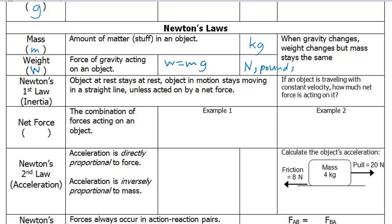One key thing that comes up here is this example. If an object is traveling with constant velocity, how much net force is acting on it? The key words here are constant velocity. That tells us that the acceleration is zero, and that tells us that the net force acting on it is zero.